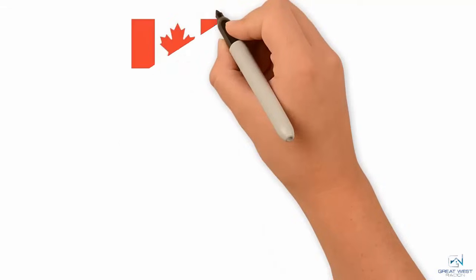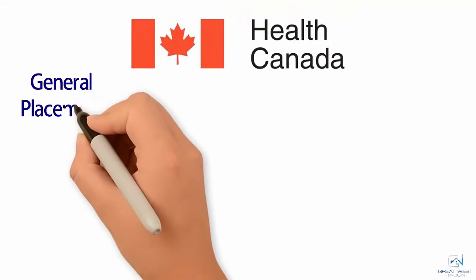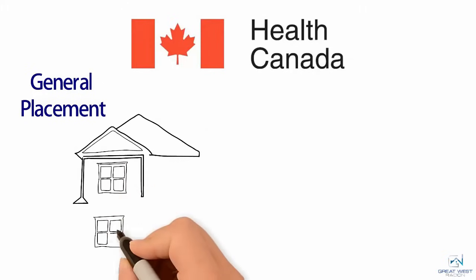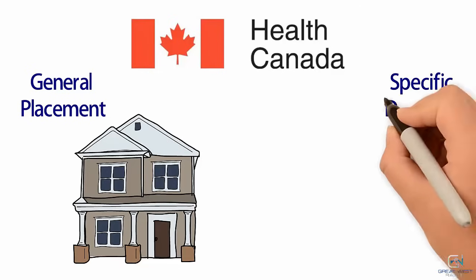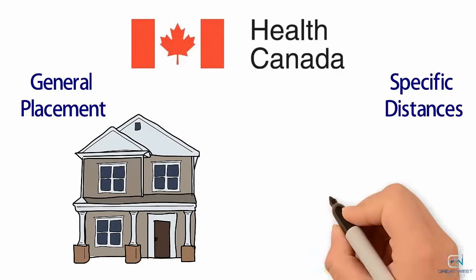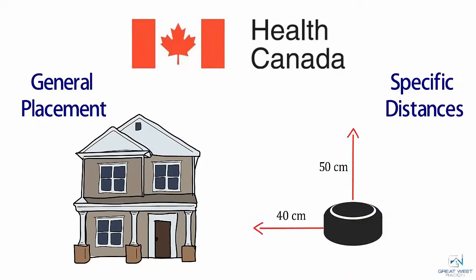There are two types of guidelines from Health Canada. One is General Placement, which gives information on the types of areas that would be most effective for placing your radon testing device. The second is a specific list of distances from the detector to objects, walls, floors, etc.